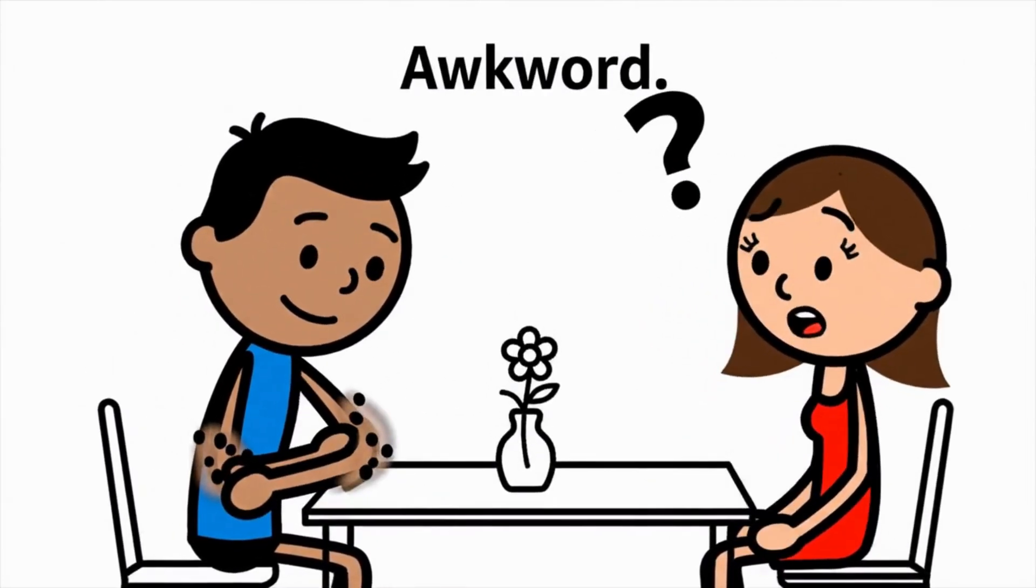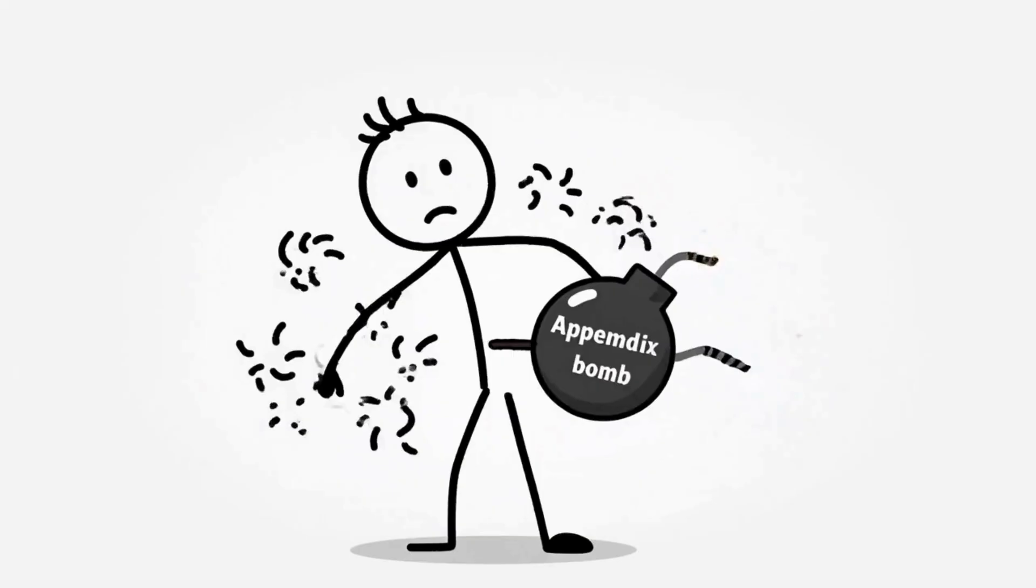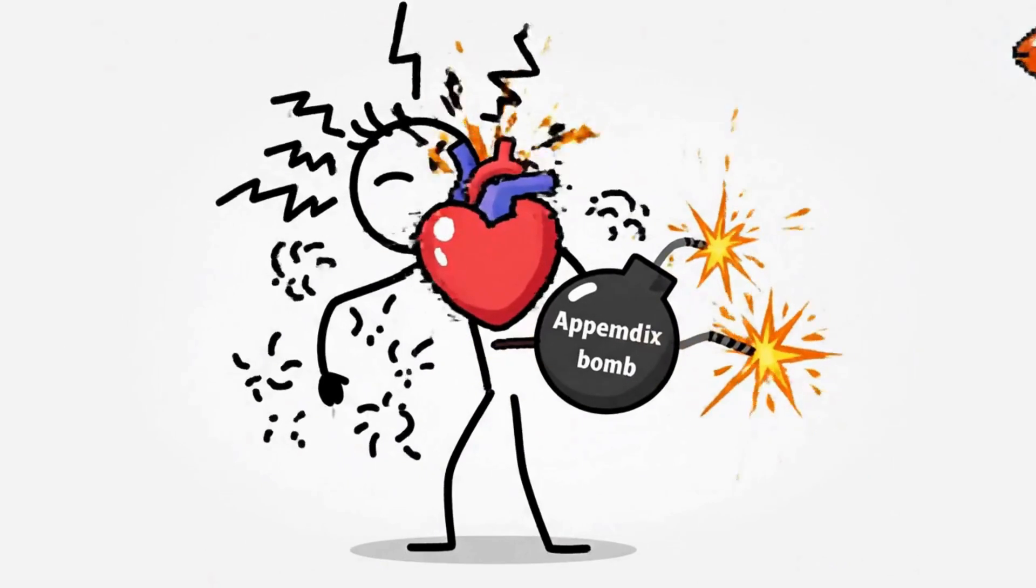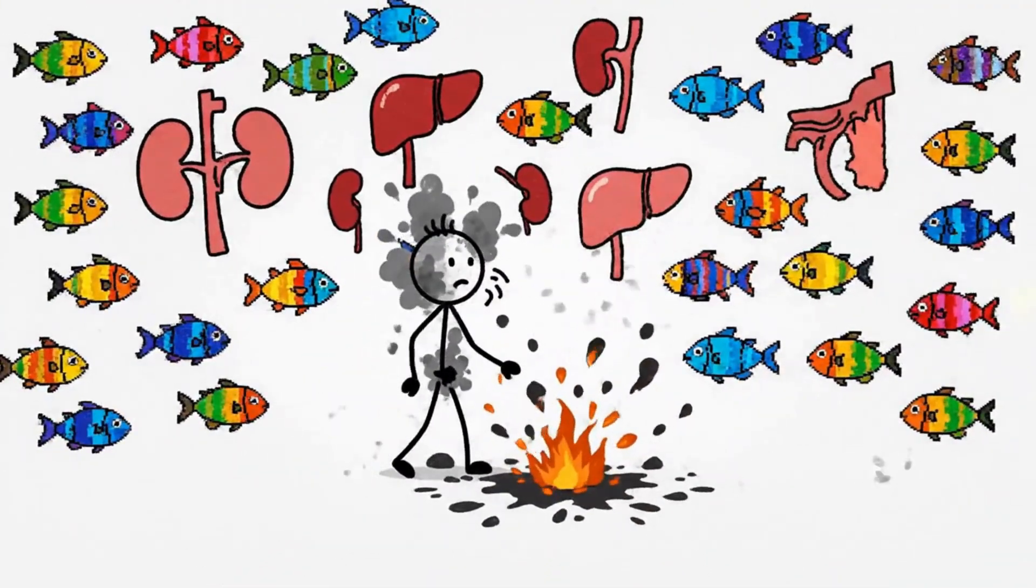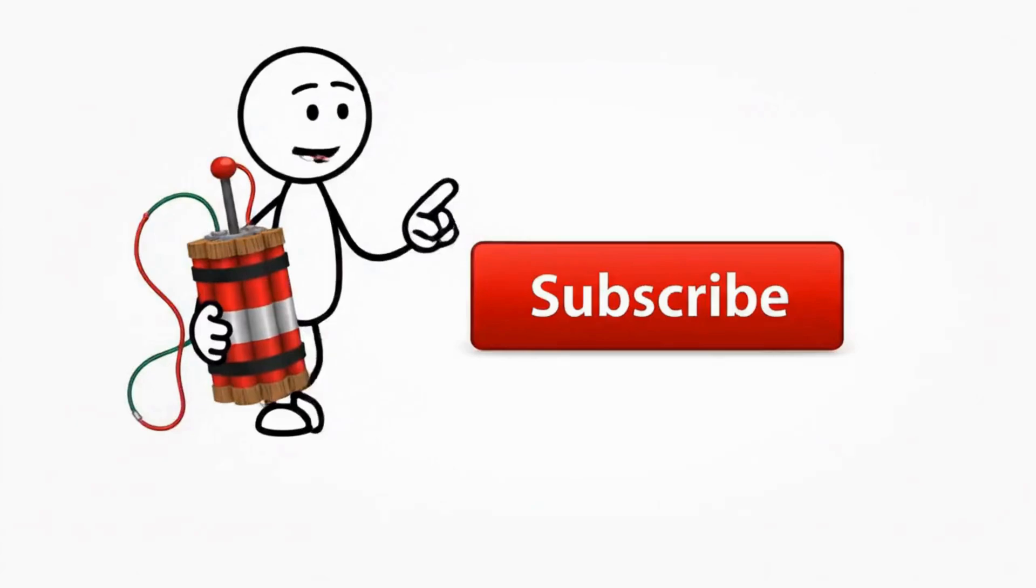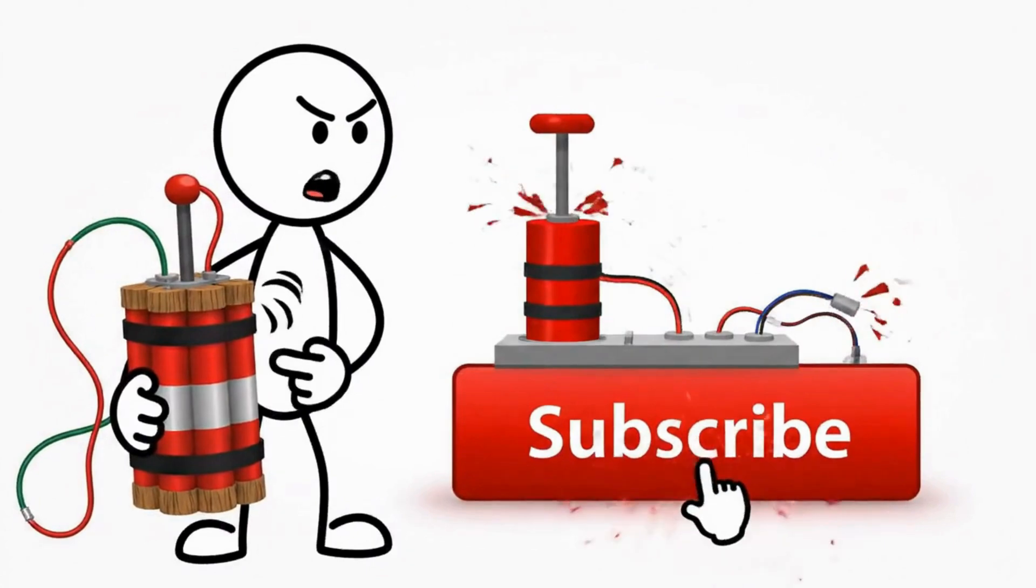So next time you get chills on a date, tell them your inner monkey is active. From exploding organs to fish glitches, your body is a weird, ancient history museum. If you learned something new, hit subscribe before my appendix decides to explode again.